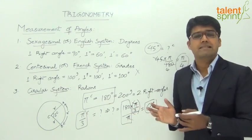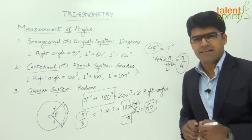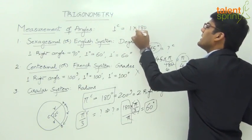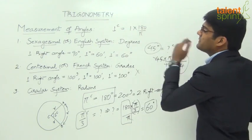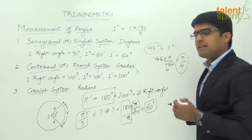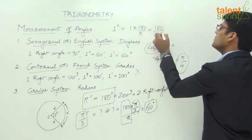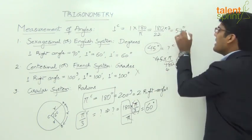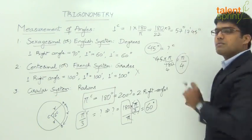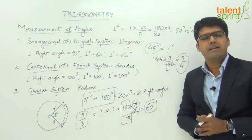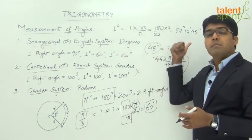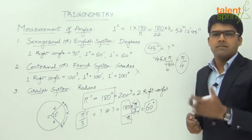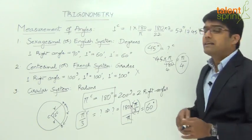Using our conversion formula, one radian equals 180/π degrees. Since π ≈ 22/7, this becomes 180 × 7/22, which simplifies to approximately 57 degrees. The precise value is 57 degrees, 17 minutes, and 45 seconds. It is good to memorize this value. If a question directly asks what one radian equals in degrees, you can mark the answer without doing any calculation.